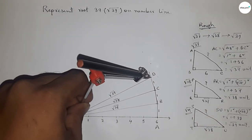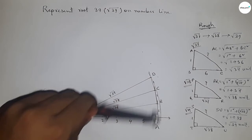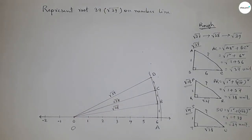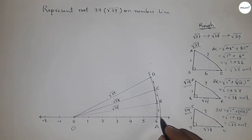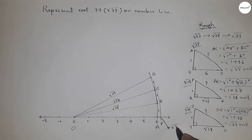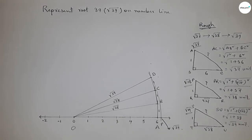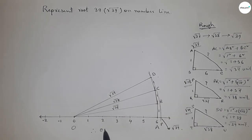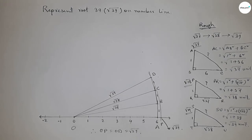Take the length OD by compass and draw an arc which meets the number line at point P. This is the representation of root 39 on the number line. Therefore OP = OD = root 39 units. Thanks for watching — please subscribe, like, and comment.